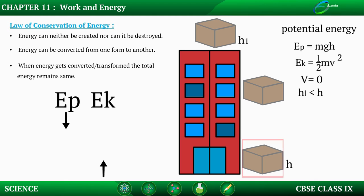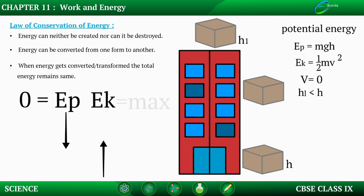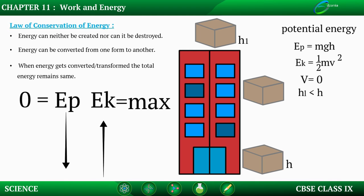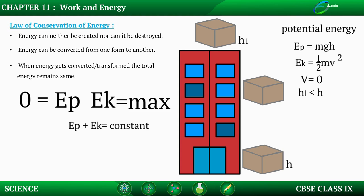When the box is at the lowest point, about to touch the ground, potential energy will become 0 and kinetic energy will be maximum. So in the whole system, potential energy changes from maximum to 0 and kinetic energy goes from 0 to maximum — the energy has changed its form, potential energy is converted into kinetic energy. In this system we can say E_p plus E_k equals a constant. Energy gets converted or transformed, but the total energy remains the same. That is: mgh + (1/2)mv² = constant. Potential energy gets converted into kinetic energy — that is the proof of the law of conservation of energy.